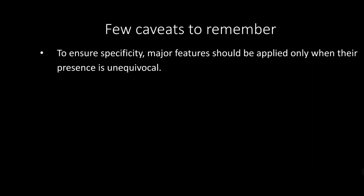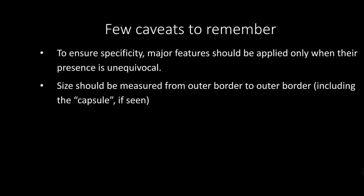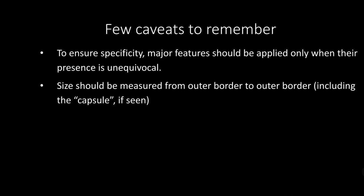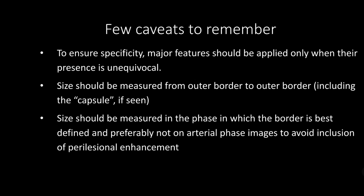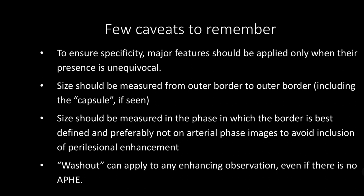A few important caveats: to ensure specificity, major features should be applied only when their presence is unequivocal. Size should be measured from outer border to outer border, including the capsule if seen, in the phase where the border is best defined — preferably not the arterial phase, due to perilesional arterial hyperenhancement. The term washout can apply to any enhancing observation, even if there is no arterial phase hyperenhancement.